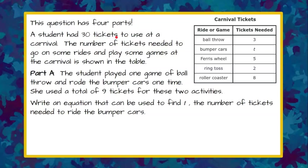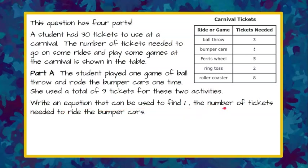A student had 30 tickets to use at a carnival. The number of tickets needed to go on some rides and play some games at the carnival is shown in the table. Part A: The student played one game of ball throw and rode the bumper cars one time. She used a total of nine tickets for these two activities. Write an equation that can be used to find T, the number of tickets needed to ride the bumper cars. Please pause, answer the question, and come back and hit play when you're done.